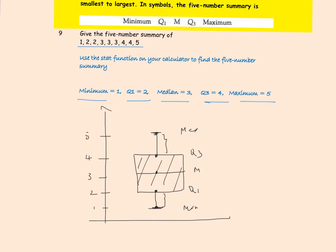A box and whisker plot gives us a lot of information: the minimum, the maximum, and the quartiles. Notice that the median runs right in the middle of the box, which tells us it is a symmetrical distribution. The whiskers are the exact same size, so it kind of gives us the shape of the distribution as well.